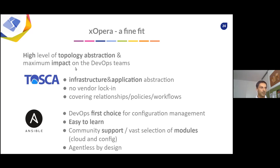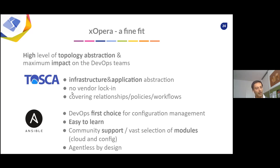We chose Ansible because it implements the lifecycle of the operation of nodes through Ansible playbooks. We specifically chose Ansible because it is the first choice among tools for configuration management. It's really easy to learn. It fits perfectly with the Tosca YAML because the definition of Ansible playbooks is very similar to Tosca — it's also YAML. It has great community support and a vast selection of modules that can be reused easily through these playbooks. The important point is that it is agentless by design, so you don't need to supply any agents to execute on specific targets — especially for HPC, this was a nice fit.